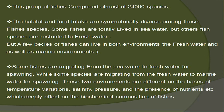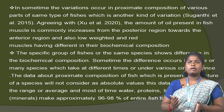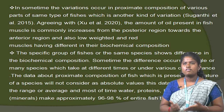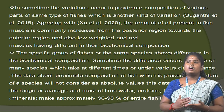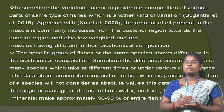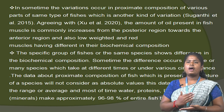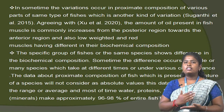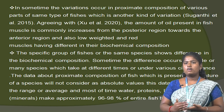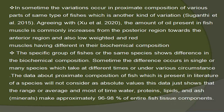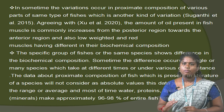These environmental differences deeply affect the biochemical composition of the fish. Sometimes variation occurs in the proximate composition of various parts of the same type of fish, which is another kind of variation. The amount of oil present in the fish is commonly increased from the posterior region towards the anterior region. Also, low weight and the red muscle have a difference in biochemical composition. The specific group of fish of the same species can show differences in biochemical composition. Sometimes the difference occurs in a single or many species taken at different times or under various circumstances.